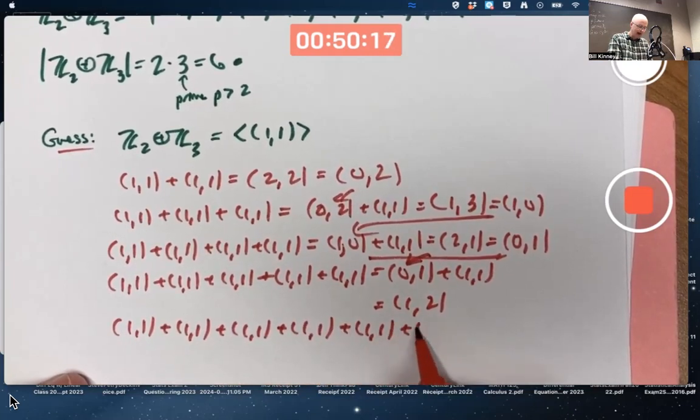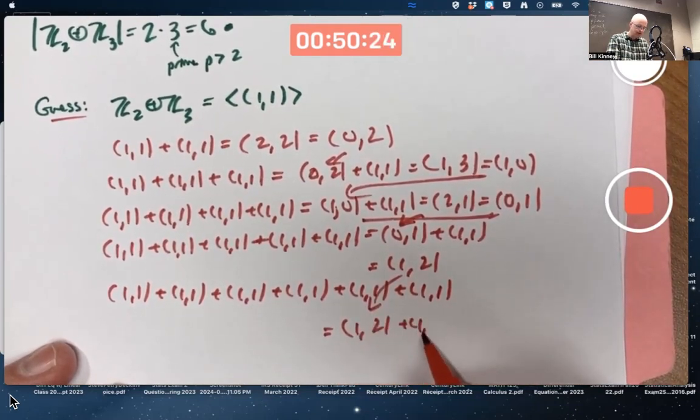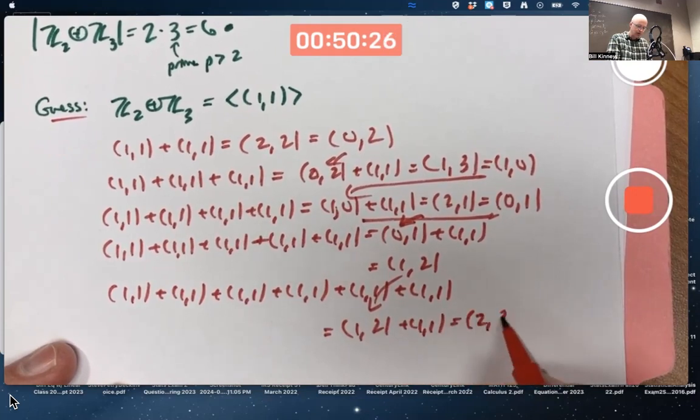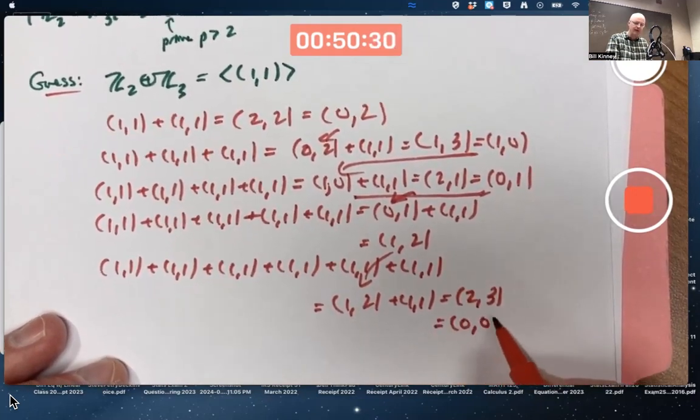What am I going to get when I do that? Bring the (1,2) down here and add (1,1). That gives me (2,3), but the first component is mod 2 and the second component is mod 3. I'm back to the identity.